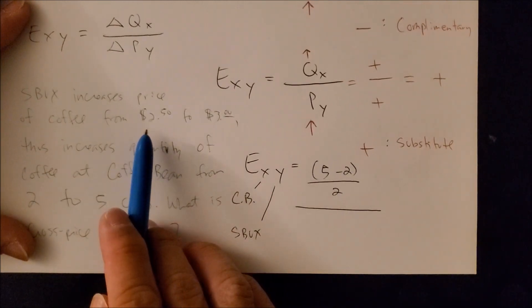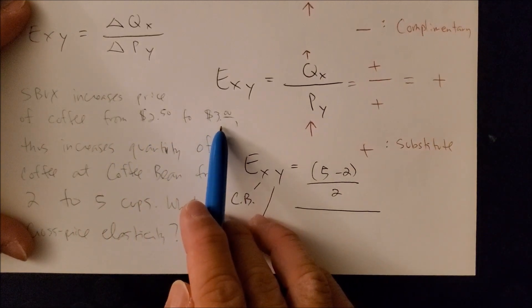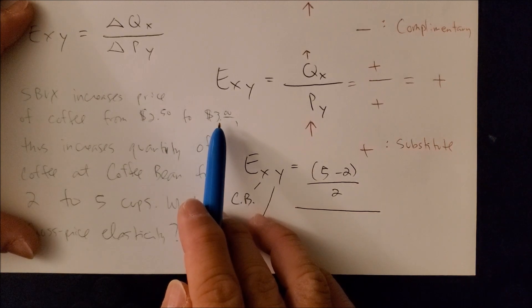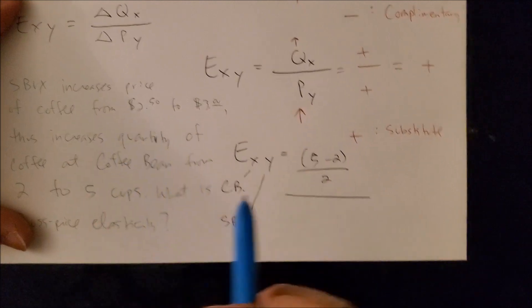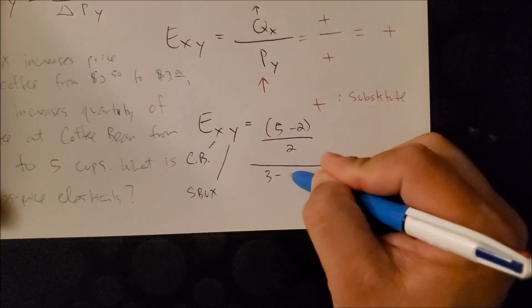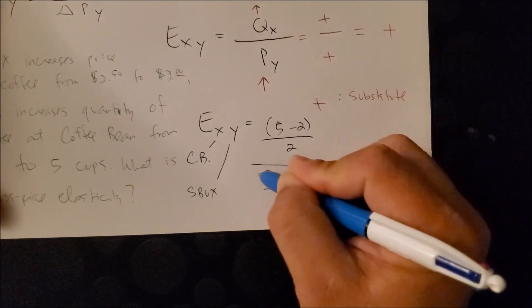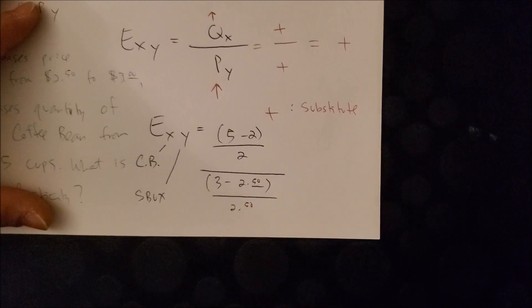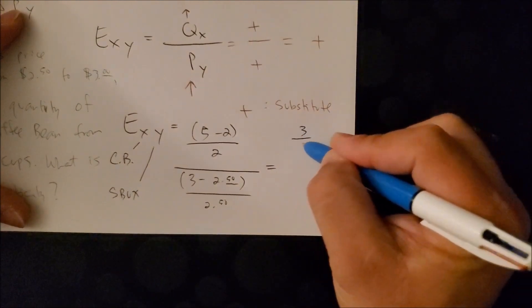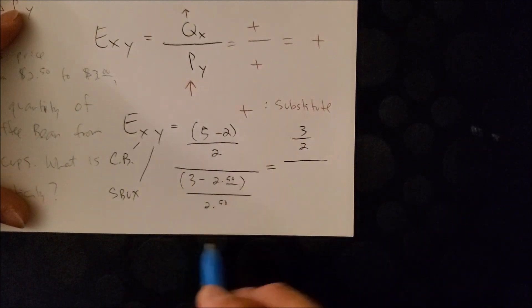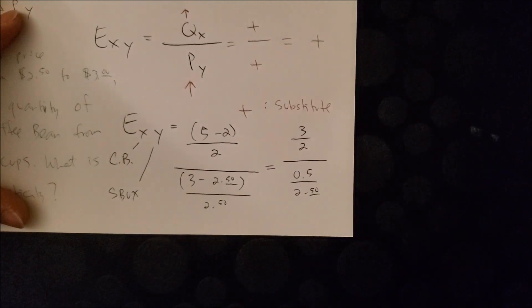Now we have the price. And here we have from $2.50 to $3. So, 3 would represent P2, the new price, minus 2.5 is the old price. We can put $3 minus 2.5 over 2.5 in parentheses. And now we can solve for this equation. We're now going to have 3 over 2 on the numerator. And now we're going to have 0.5 over 2.5 on the denominator.